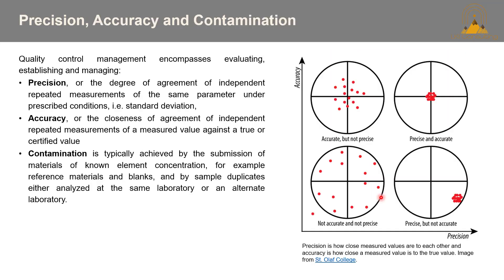Accuracy versus precision is a really important concept to grasp in your QAQC data. There's a schematic that demonstrates samples that are accurate but not precise, precise but not accurate, not accurate and not precise, and both precise and accurate. Precision is the degree of agreement of independent repeated measurements of the same parameter under prescribed conditions, whereas accuracy is the closeness of agreement of independent repeated measurements of a measured value against a true or certified value.